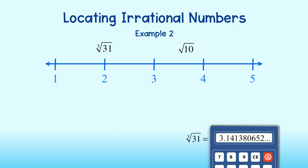So let's see, the cube root of 31 truncated to two decimal places is 3.14. The square root of 10 truncated to two decimal places is 3.16.